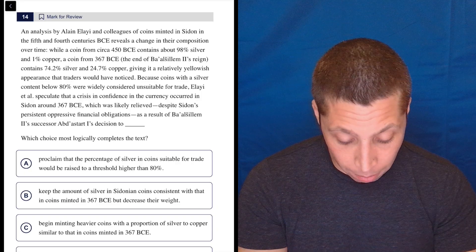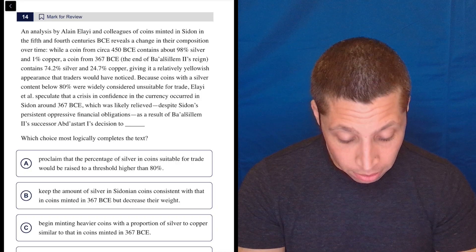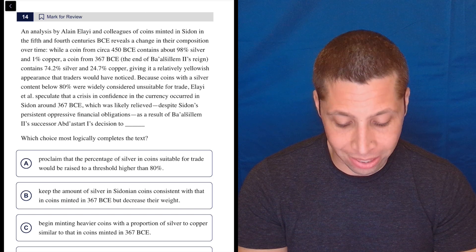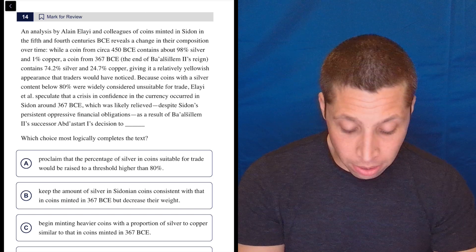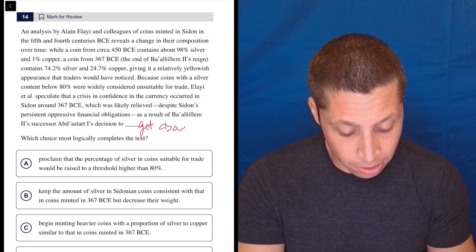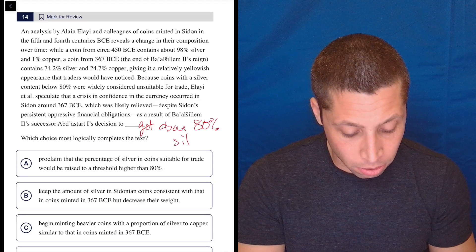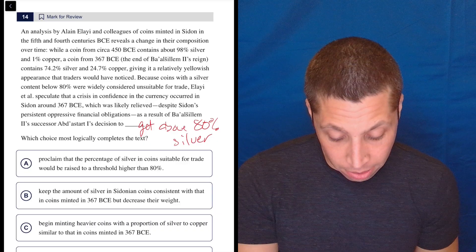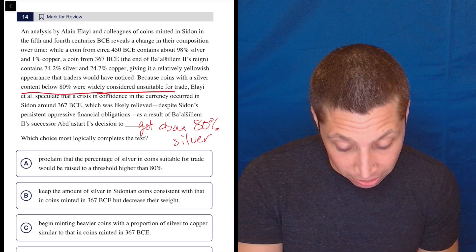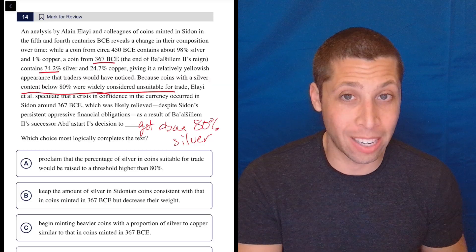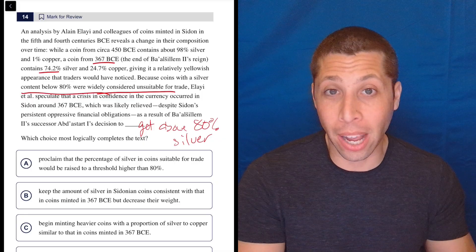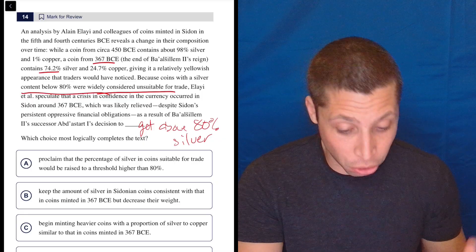Around 367 when there was less silver, it was below 80%, which was likely relieved despite Sidon's persistent oppressive financial obligations as a result of this person's successor's decision. So to me, this is saying get above 80% silver. They say content below 80% is unsuitable. So why is there a crisis? Because in 367 we had less than 80%. So if there's a crisis, you got to get more silver back in there. People are not going to trust the currency.